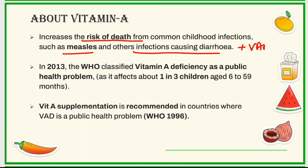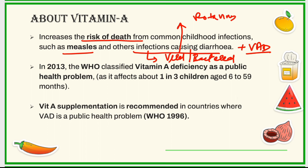Apart from this, there is also increased risk of death from common childhood infections like measles and other infections that cause diarrhea, when present along with vitamin A deficiency. These infections causing diarrhea can be due to viral infections — for example, rotavirus or Norwalk virus — or bacterial infections such as Salmonella, Shigella, or Vibrio cholerae bacteria.